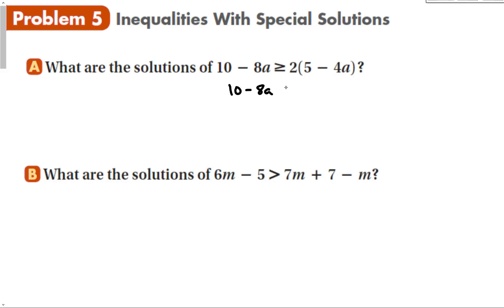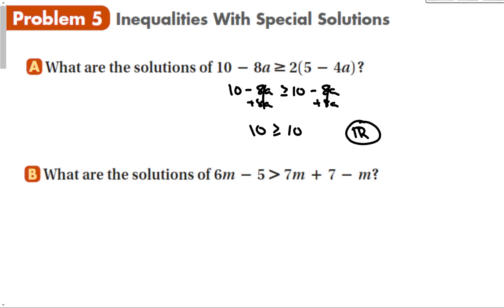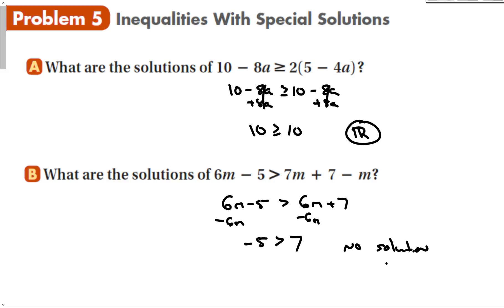We have 10 minus 8a is greater than or equal to 10 minus 8a. Adding 8a to both sides cancels the variables, leaving 10 ≥ 10. Since 10 equals 10, this is true, so the solution is all real numbers. For 6m minus 5 is greater than 7m plus 7 minus m: simplifying the right side gives 6m plus 7. Subtracting 6m from both sides gives negative 5 is greater than 7, which is not true — so this has no solution.